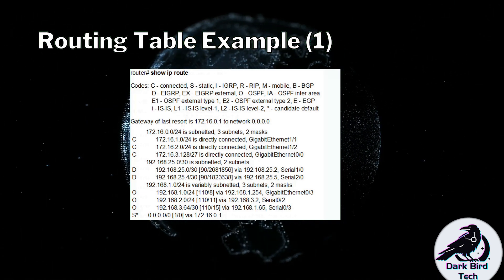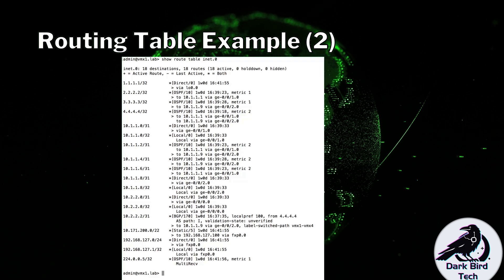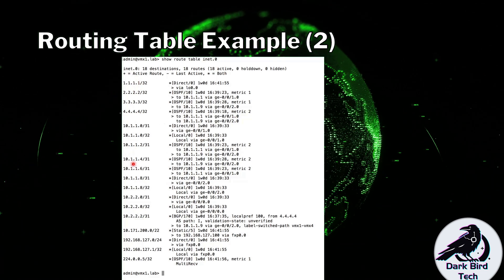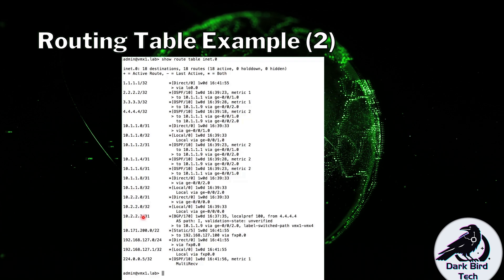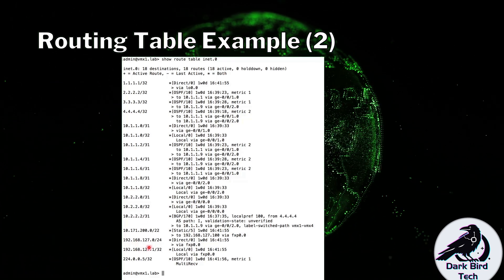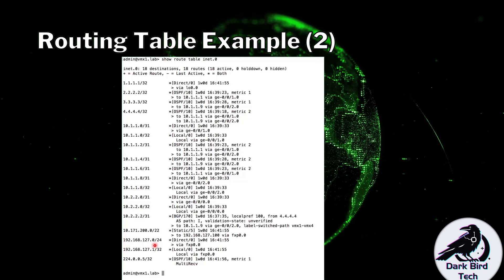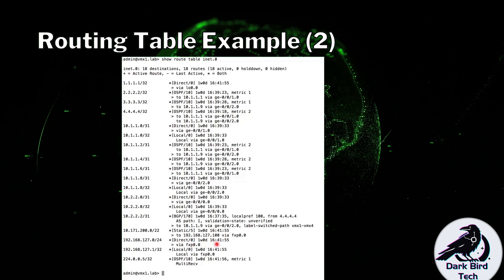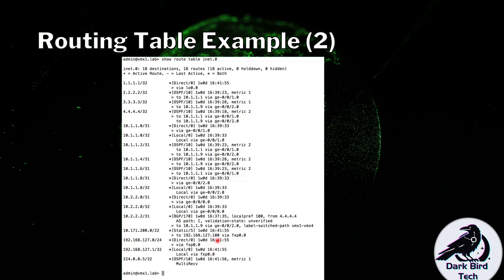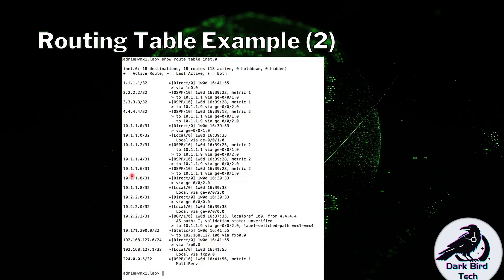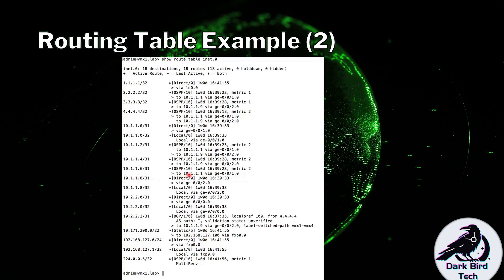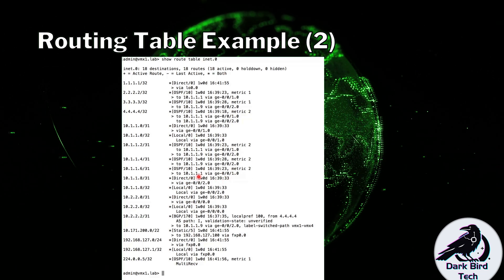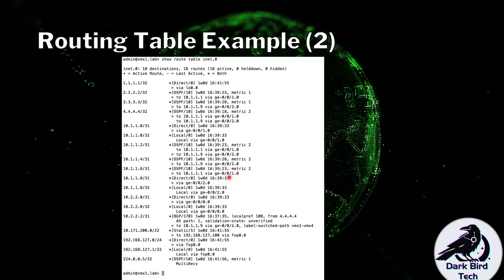Here's a Juniper routing table. It populates with network addresses, and for a directly connected route — say 192.168.1.27.0/24 — it shows in square brackets that it's directly connected, with a preference of 0, the interface, and how long that route has been active. For an OSPF route such as 10.1.1.6/31, it shows learned via OSPF, a preference of 10, the interface it was learned on, and the next hop IP address via that interface.